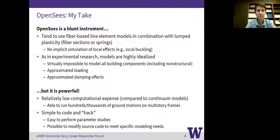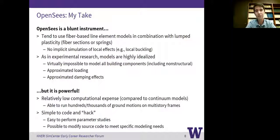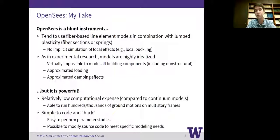OpenSees is indeed powerful, and this is why so many people are using it. It has a relatively low computational expense compared to continuum models. For the most part I'm talking about fiber-based line element models today — you might see continuum models from Abaqus, Ansys, or LS-Dyna — but because of the low computational expense of line element models, we're really able to run hundreds or thousands of ground motions with multi-story frames and get an understanding of the dynamic effects of the full systems.